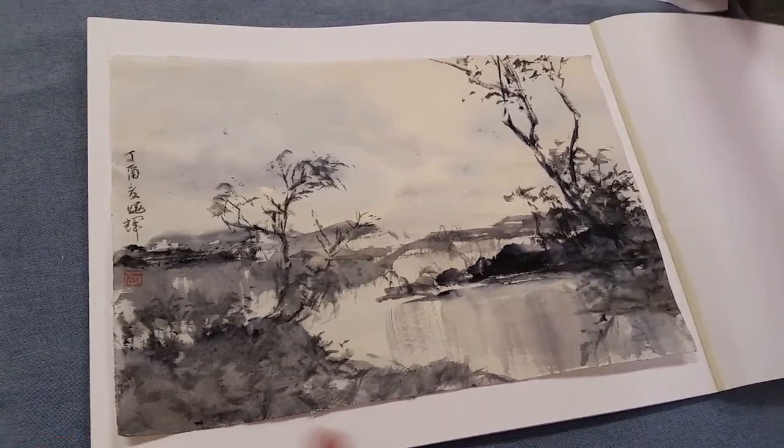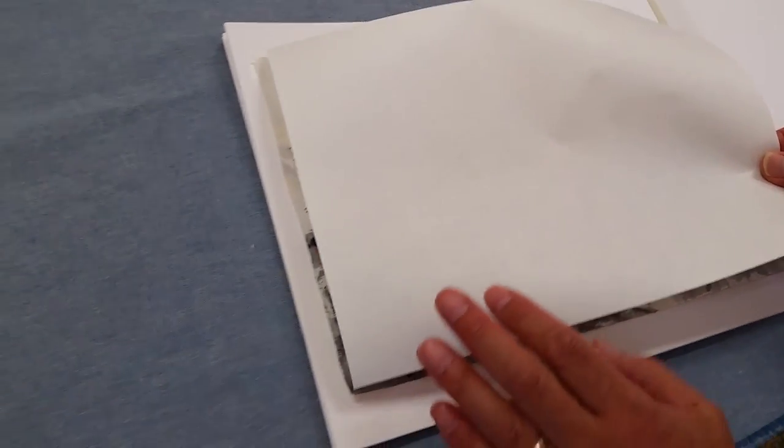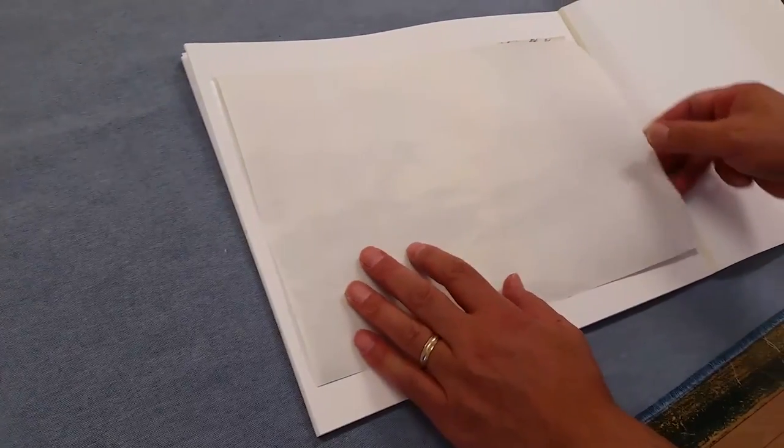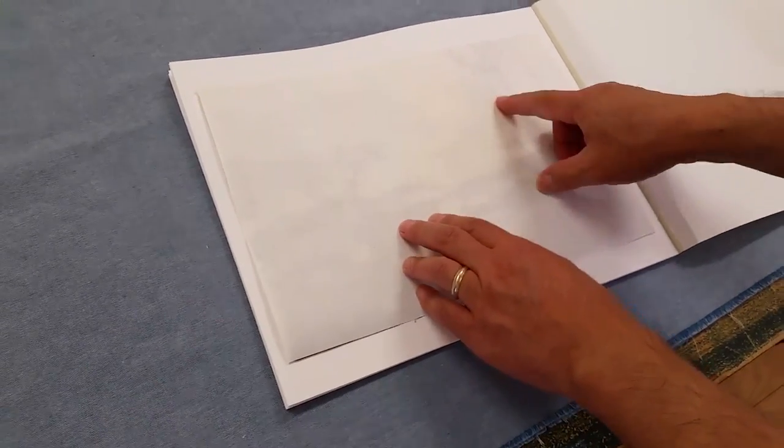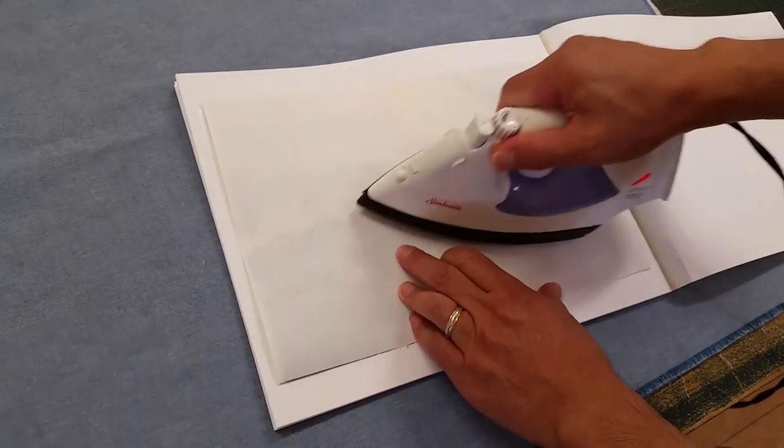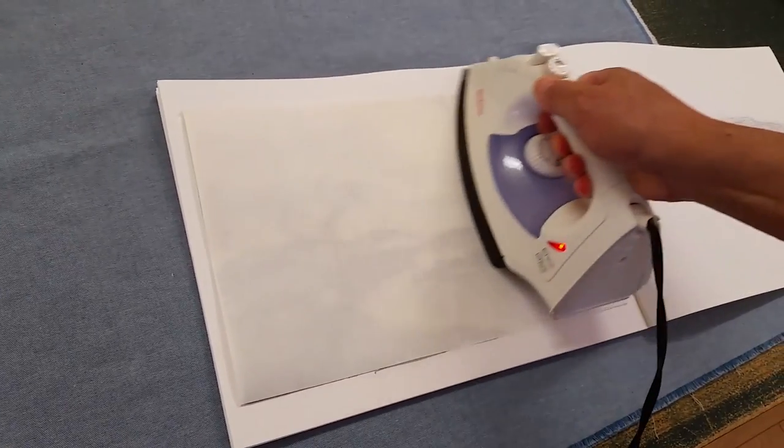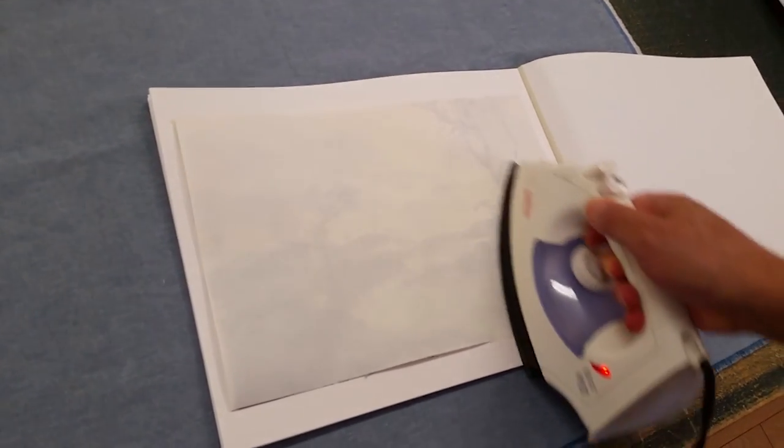I put this release paper back on as a protecting sheet on top of the painting. Now I just iron one more time to activate the adhesive.